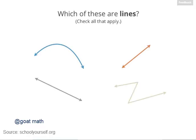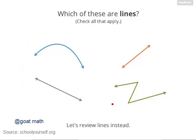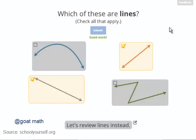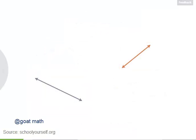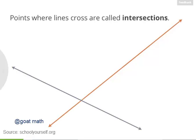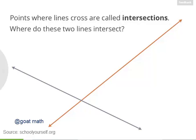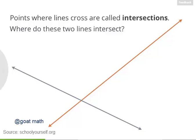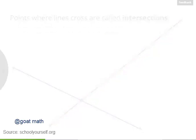Before we get into what parallel means, why don't you identify which of these are lines? If you're not sure, click down here to review. Exactly, these are lines, meaning they're straight paths that go on forever in both directions. So without changing these lines, we can draw them so they're a little longer. Now points where lines cross are called intersections. So where do these two lines intersect? Exactly, these two lines intersect at this point over here.